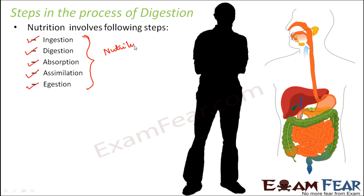Nutrition is not just about the food we eat — it is also about how we take that food inside. Ingestion is the intake of food. Digestion is how the food is broken down from complex to simpler form. Absorption is how the simpler form is taken up by different parts of the body. Assimilation is how the absorbed food is used by different cells of the body. And egestion is throwing out the remaining undigested part of food. All these steps together form the entire process of nutrition.